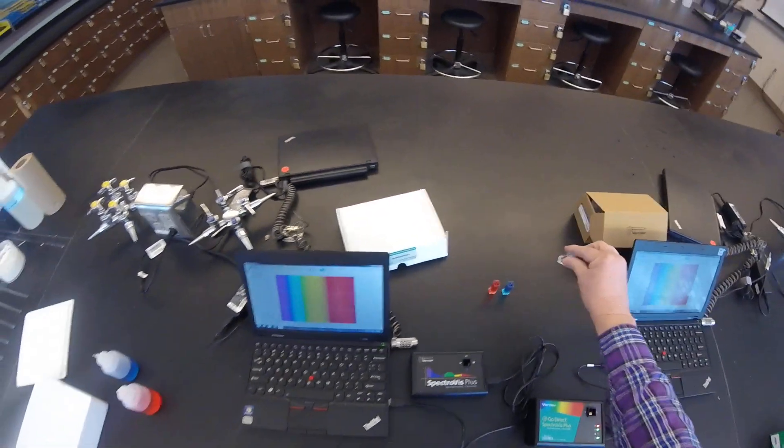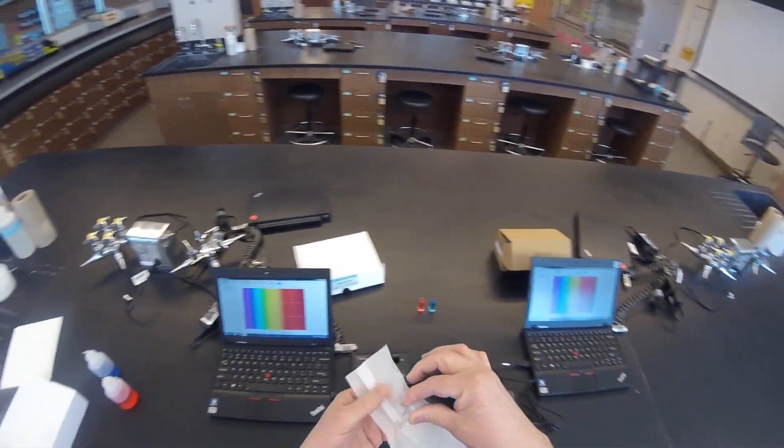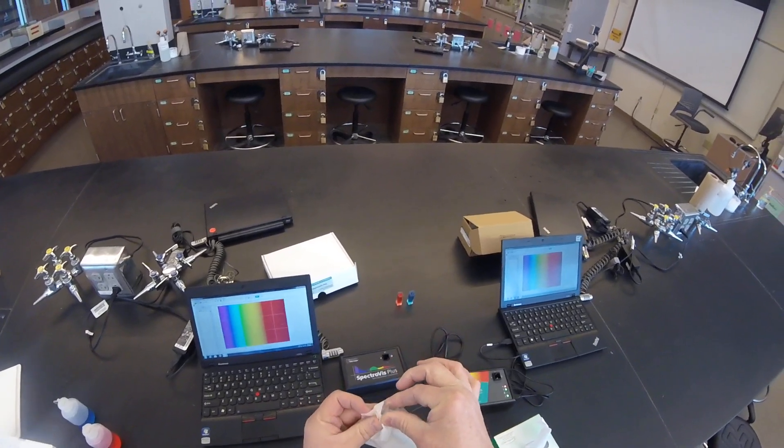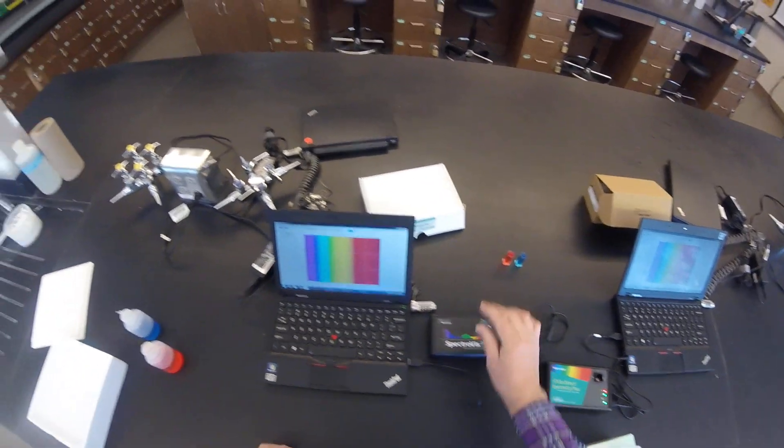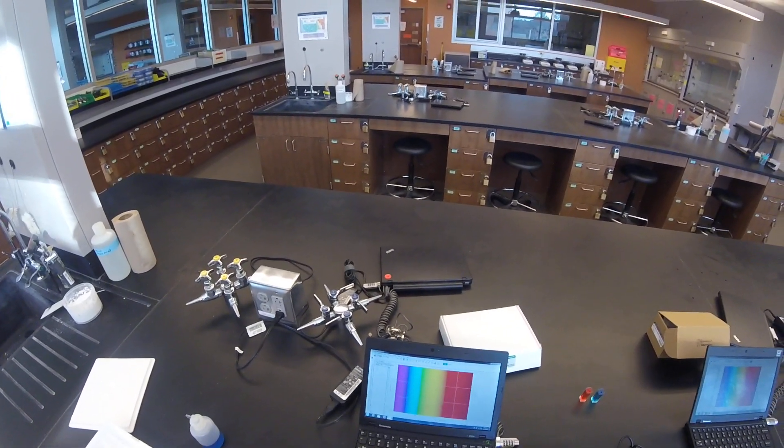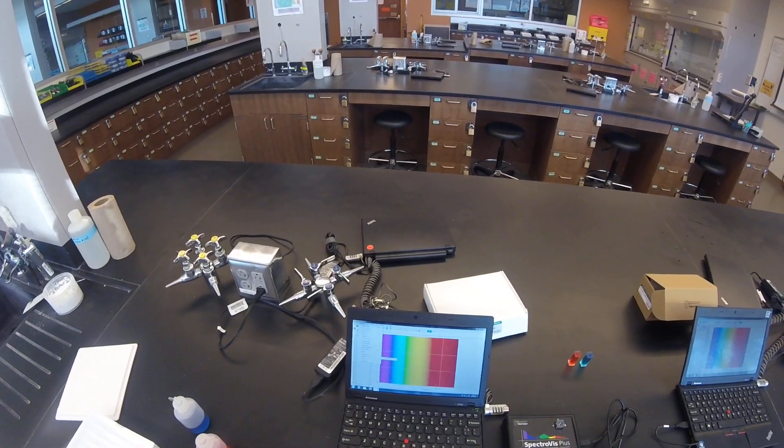You'll want to take yourself a cuvette with your blank. In my case, the blank is distilled water, because that's what I've got my blue and red dye dissolved in. We'll go ahead and go over here to the experiment. Click on Calibrate Spectrometer.